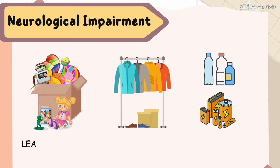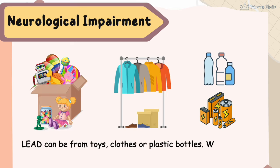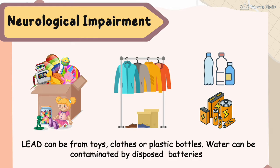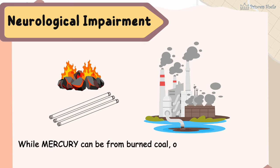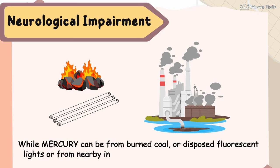Lead can be from toys, clothes, or plastic bottles. Water can be contaminated by disposed batteries. Mercury can be from burned coal or disposed fluorescent lights, or from nearby industries which contaminate the water.